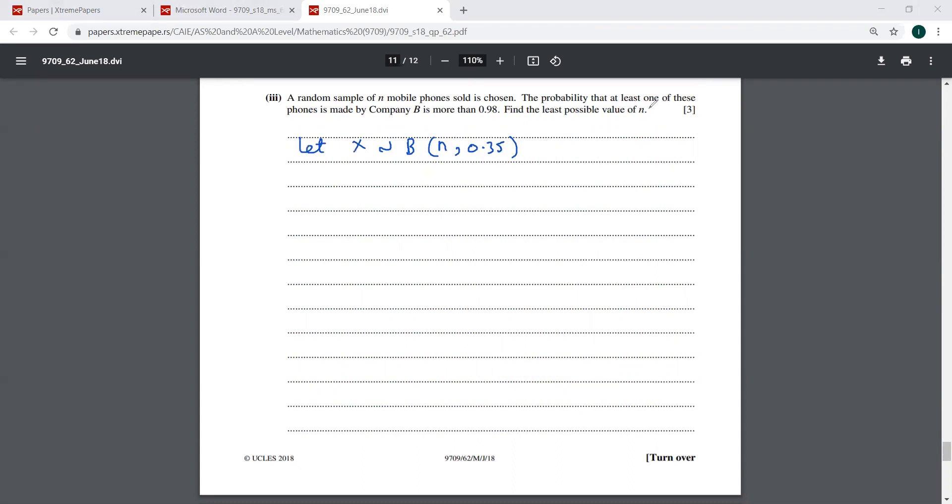If you remember, the probability for company B is 0.35 is more than... Now he says at least one of these phones. So probability that X is more than or equal to one is more than 0.98. That is what he's giving us. So we have to find the least possible value of N here. Are you clear how I wrote this?